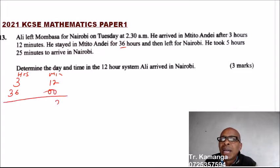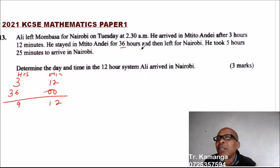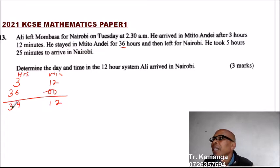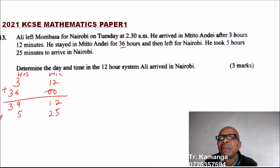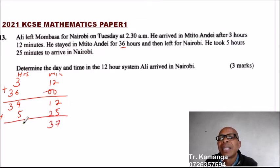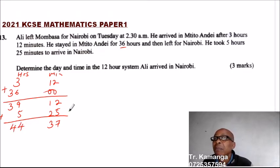Adding those together: 3 hours 12 minutes plus 36 hours gives 39 hours 12 minutes. Then he took 5 hours 25 minutes from Mutito Andei to Nairobi. Adding that gives a total of 44 hours 37 minutes for the whole journey.